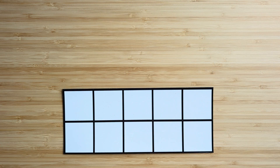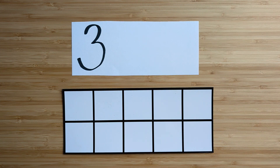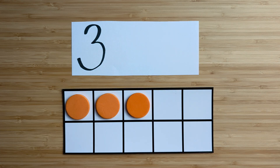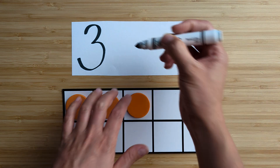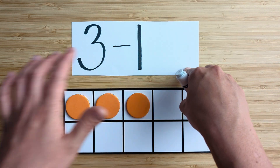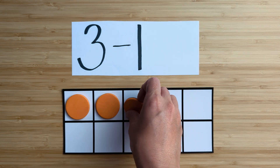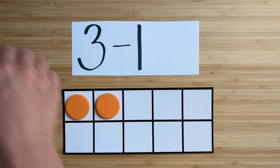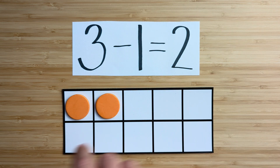Clear off your board. Let's try the next one. Make the number three. One less than three — point and count: one, two, three. What's one less than three? Point and count: one, two. Two is one less than three. Nice job.